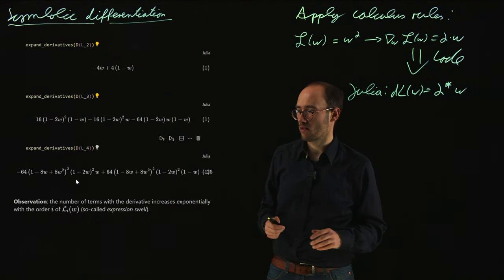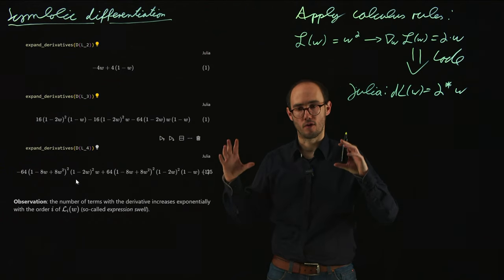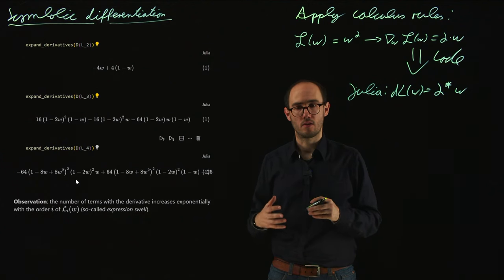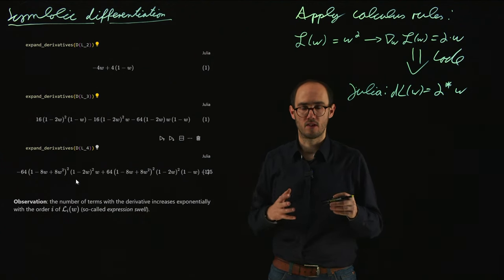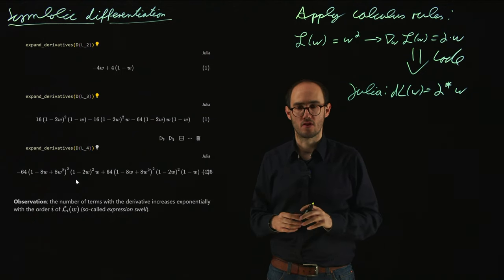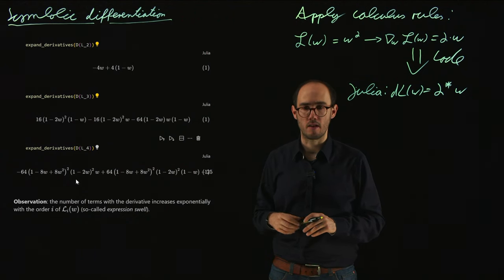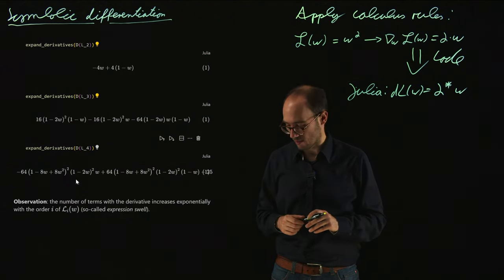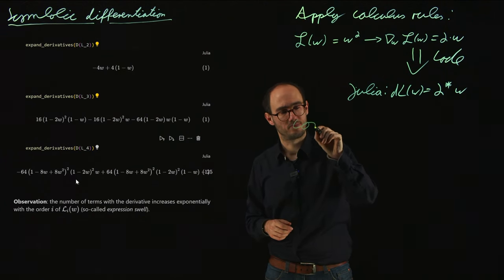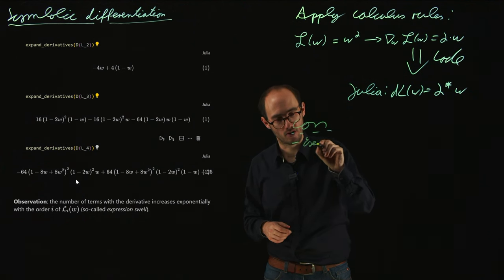And what that is called is a so-called expression swell, basically meaning if we have long expressions like long functions which are interconnected, then applying the calculus rules like for example the multiplication rule, that will lead to very long expressions where we need to store a lot of intermediate results and also a lot of intermediate memory demand is generated by that. So the first con-argument against symbolic differentiation is this so-called expression swell.